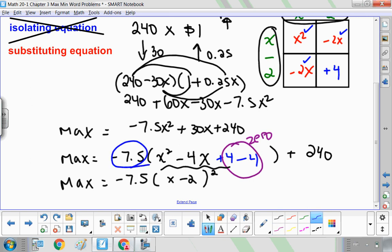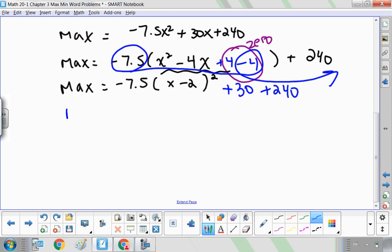Now don't forget about that negative 4 on the inside. So negative 7.5 times negative 4 comes out. So negative 7.5 times negative 4 is positive 30. So I add positive 30 to the 240 that is already outside the brackets. So my maximum is negative 7.5(X minus 2) squared, and 30 plus 240 is 270.